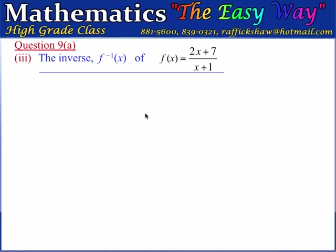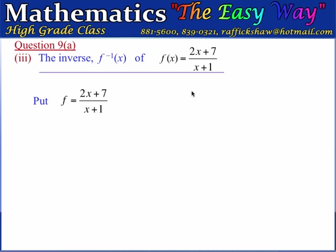Part 3 wants us to find the inverse function f to the minus 1 of x. f to the minus 1 of x is the function that maps the range of f of x back onto the domain of f of x. The calculation is obtained by interchanging the representation of the range with the domain. We write the f of x function as f equals 2x plus 7 divided by x plus 1, leaving off the x notation to avoid confusion with the x's representing the domain.